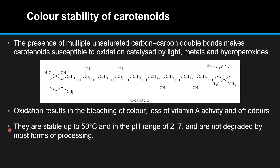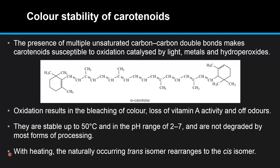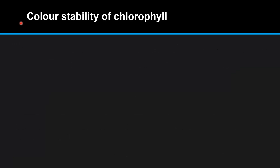Carotenoids are stable up to 50°C and in the pH range of 2 to 7, and are not degraded by most forms of processing. With heating, the naturally occurring trans-isomer rearranges to the cis-isomer.